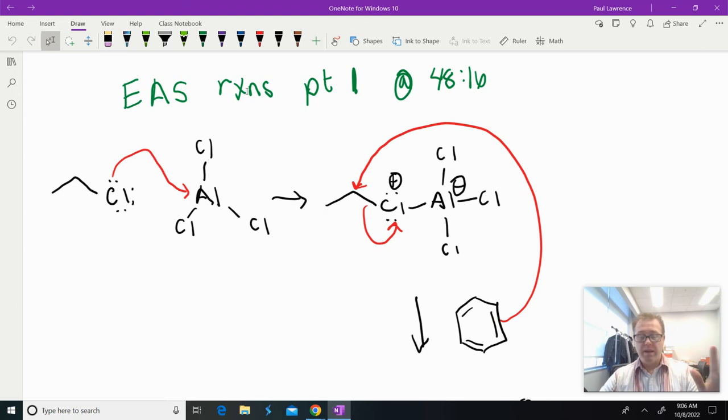What was being covered at 48 minutes is the Friedel-Crafts alkylation, where we have this primary alkyl chloride reacting with aluminum trichloride to generate this intermediate. At this intermediate, this carbon right here is electrophilic enough for the benzene ring to react with it. That was all correct in the video.